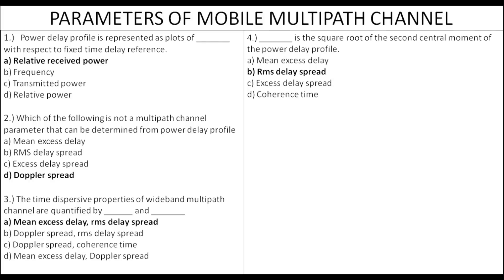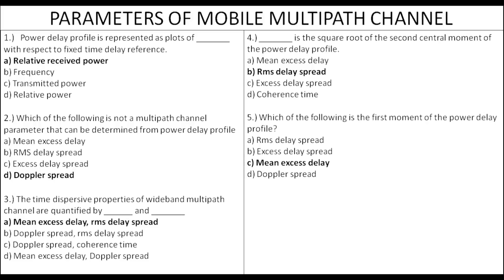RMS delay spread is the square root of the second central moment of the power delay profile. Many measurements are made to characterize that spread.